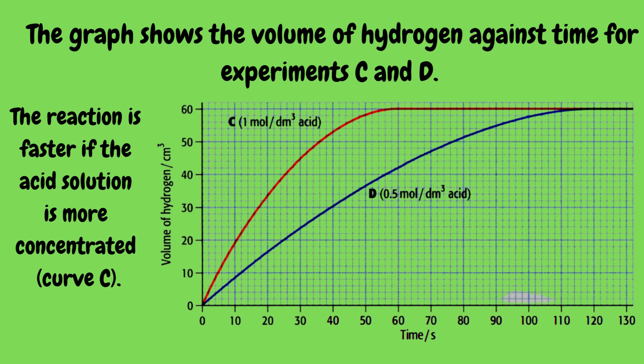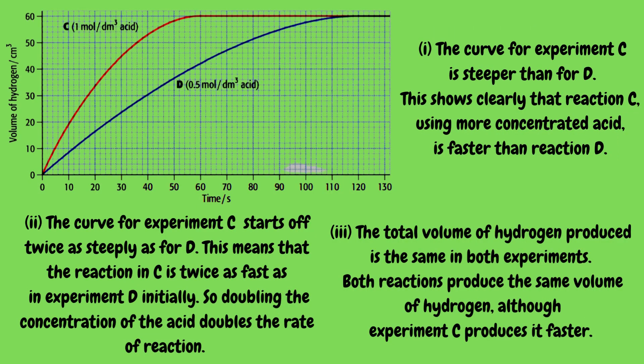The graph shows the volume of hydrogen against time for experiments C and D. The reaction is faster if the acid solution is more concentrated, shown as curve C. Curve C is steeper than curve D, showing clearly that reaction C uses more concentrated acid and is faster. Curve C starts off twice as steeply as curve D, meaning the reaction in C is twice as fast initially — so doubling the concentration of the acid doubles the rate of reaction. The total volume of hydrogen produced is the same in both experiments, although experiment C produces it faster.